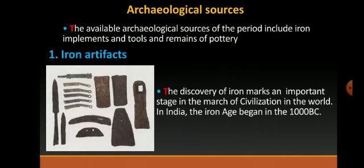In our previous class we had seen that the Aryans first settled down in the northwest region, that is on the banks of river Indus. Then after that they started to follow the flow of the rivers Yamuna and Ganga, came to the Gangetic plain and settled down. As iron implements were improved, they moved from the Gangetic plains to peninsular India.